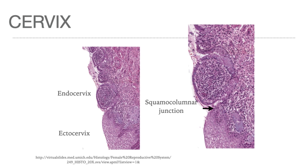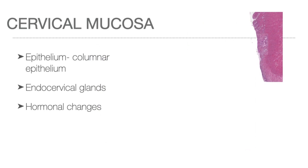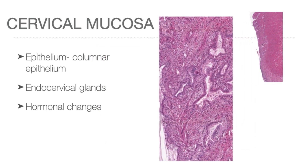A sexually active female is advised to have a yearly Pap smear, a routine screening procedure for cervical cancer. Risk factors include human papillomavirus infection, older age, poorer socioeconomic status, multiple sexual partners, and early onset of sexual activity. The endocervical canal is lined by tall columnar epithelium with nuclei displaced to the base by mucus droplets. Highly branching cervical glands extend into the submucosa, lined by similar epithelium.